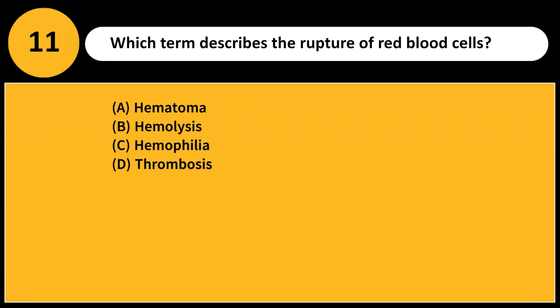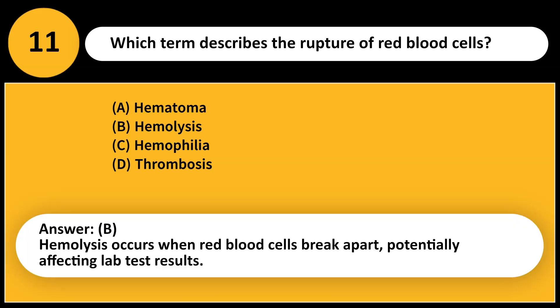Which term describes the rupture of red blood cells? A. Hematoma B. Hemolysis C. Hemophilia D. Thrombosis. Answer: B. Hemolysis occurs when red blood cells break apart, potentially affecting lab test results.